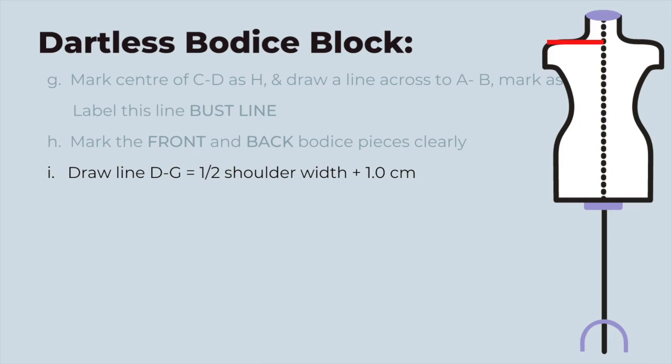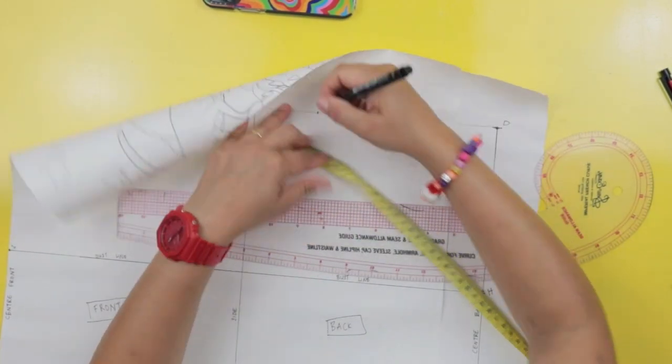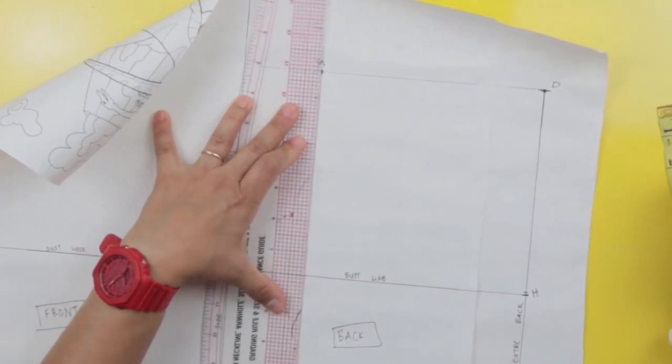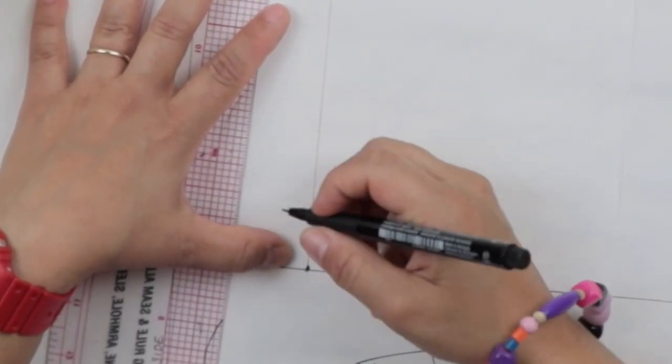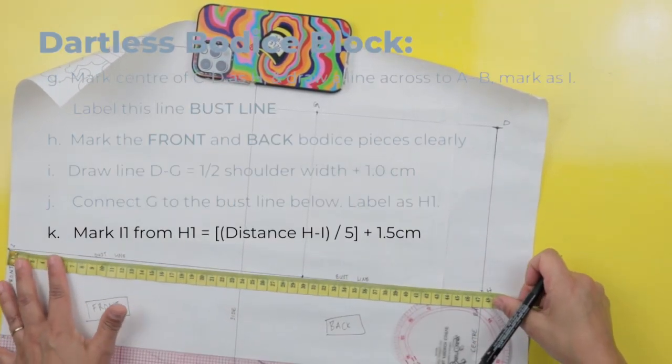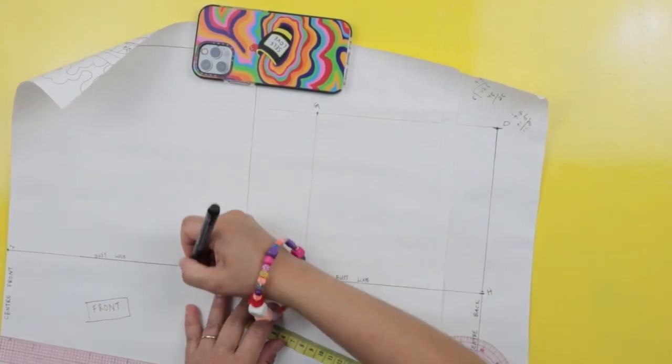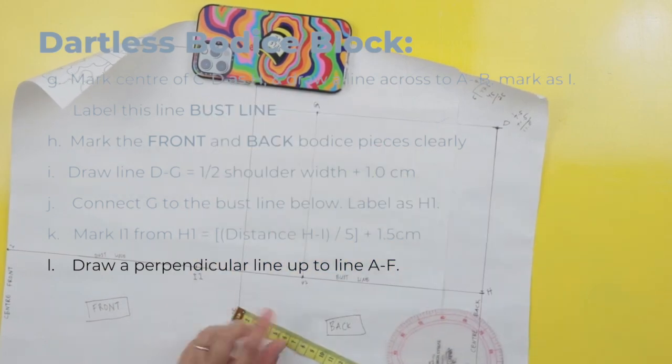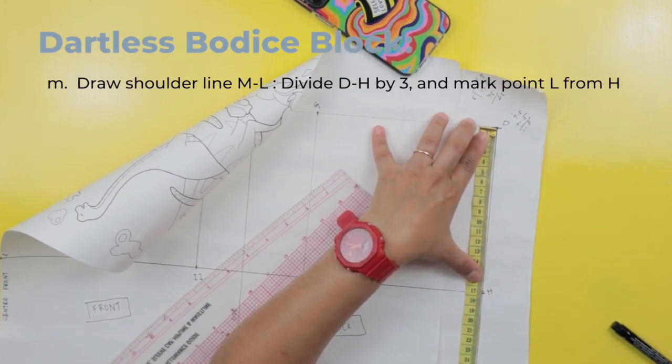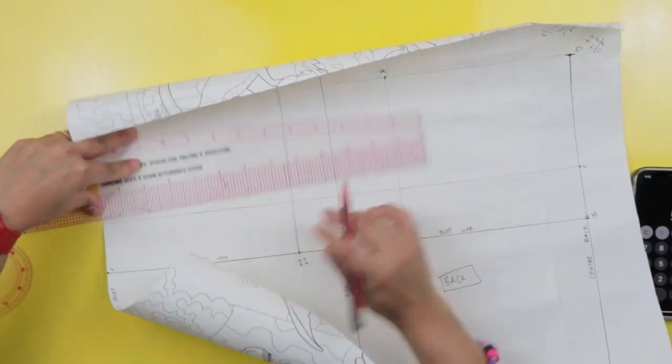Now we're going to draw a line D to G which is half your shoulder width plus one centimeter. Connect G to the bust line below and label that as H1. Now we need to mark I1 from H1. So this would be take your distance of H to I or B to C really, divide that by 5 and plus 1.5 centimeters. And then draw that from H1 and draw a perpendicular line up. Measure D to H, divide that by 3 and mark point L 1 third from H and draw a straight line across which will be labeled as your shoulder line.